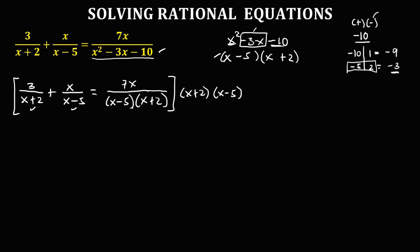For the third denominator, we have x minus 5 and x plus 2. Since we already have x minus 5 and x plus 2, there's no need to add them again. So therefore, the LCD of this rational equation is (x plus 2)(x minus 5).